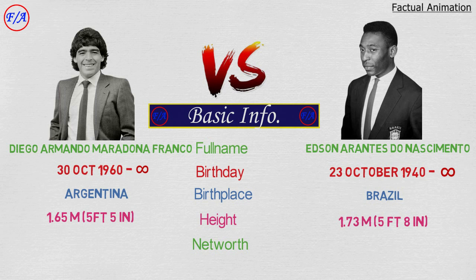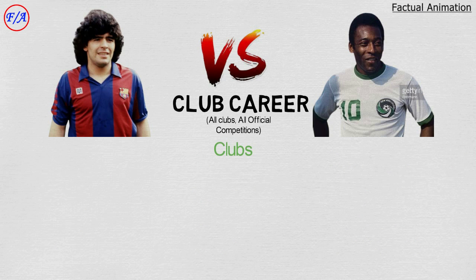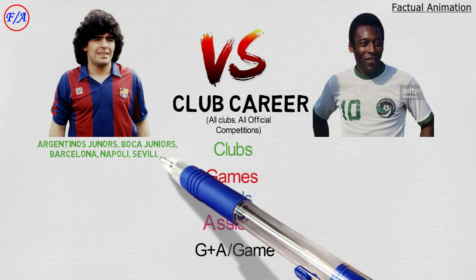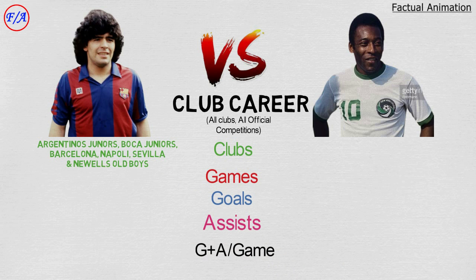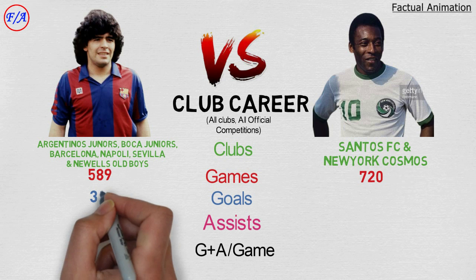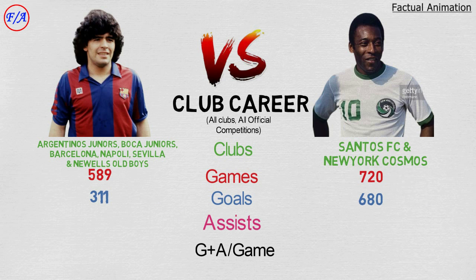Diego Maradona's net worth is $100 million; Pelé's is also $100 million. Moving to club careers: Maradona played for Argentinos Juniors, Boca Juniors, FC Barcelona, Napoli, Sevilla, and Newell's Old Boys. Pelé played for Santos FC and New York Cosmos. Maradona played 589 club games and scored 311 goals with 208 assists — 0.88 goal contributions per game. Pelé played 720 games, scored 680 goals with 300 assists — 1.36 goal contributions per game.